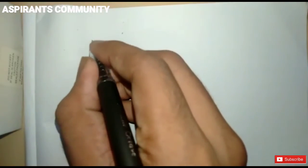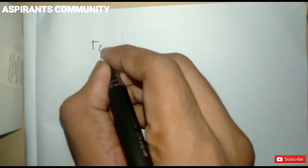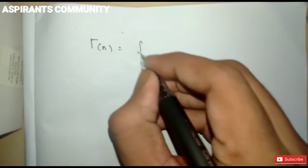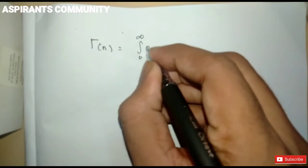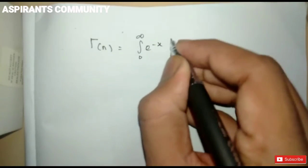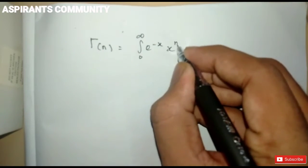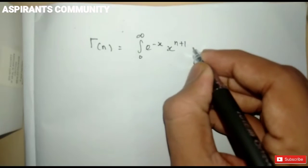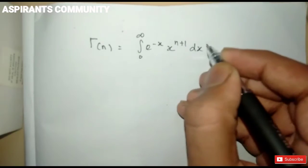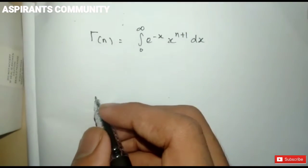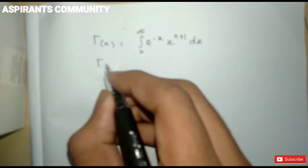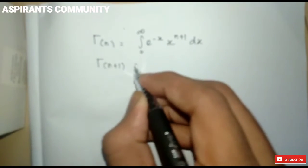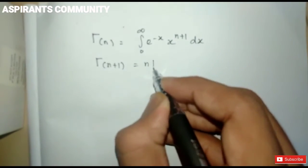Now let's look at the gamma function. Gamma of n equals the integral from 0 to infinity of e to the power of minus x, times x to the power of (n minus 1), dx. There is a key result: gamma of (n plus 1) equals n factorial.